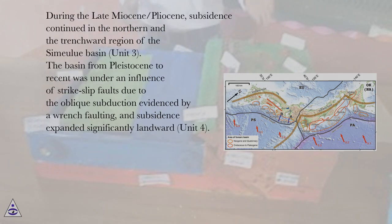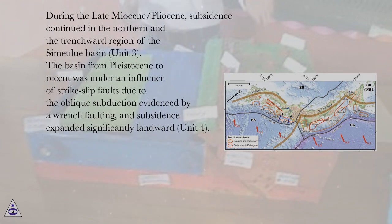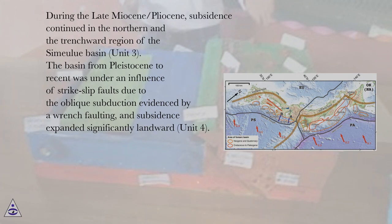During the late Miocene to Pliocene, subsidence continued in the northern and the trenchward region of the Simulu Basin, unit 3. The basin from Pleistocene to recent was under an influence of strike-slip faults due to the oblique subduction, evidenced by wrench faulting, and subsidence expanded significantly landward, unit 4.